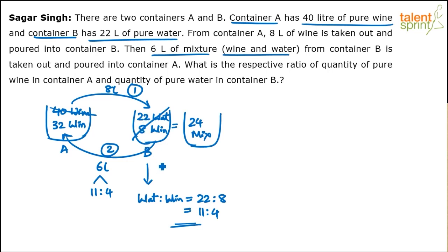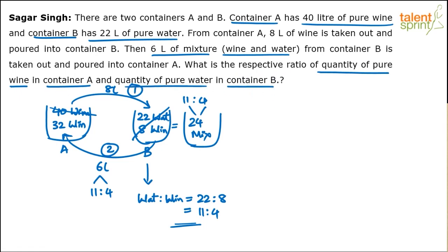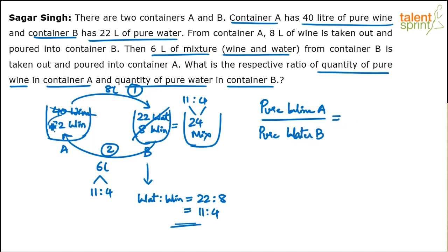To confirm: 22 plus 8 is 30 liters of mixture, from which 6 liters is taken out, so 24 liters remain — still in the 11:4 ratio. Out of 24, we can find wine and water separately. Similarly, in the 6 liters being poured into A, the ratio is also 11:4. The question asks for the ratio of pure wine in container A to pure water in container B after all this.